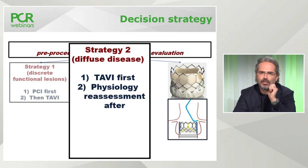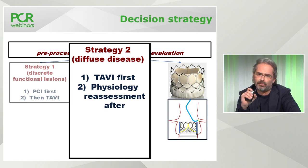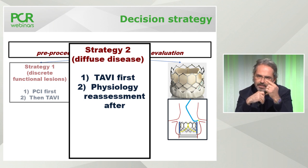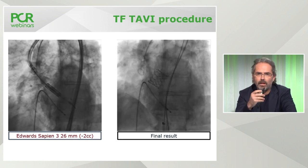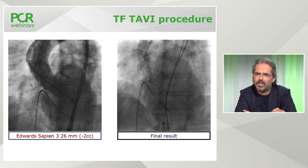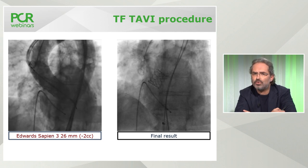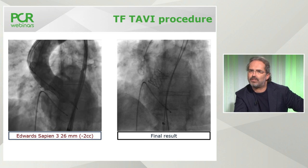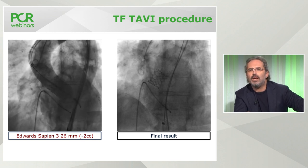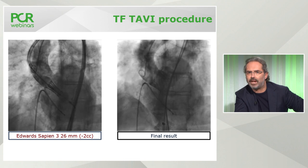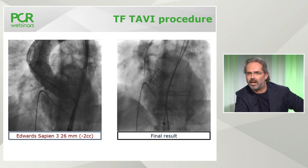We decided to go with TAVI first and reassess by physiology the functional meaning of the diffuse disease afterwards. We selected a valve that permits secure and easy coronary artery access — with the wrist plane below the coronary artery, it is easy to engage whatever catheter you use. The mean diameter was 23 mm, so we went with a 26 mm Sapien 3 given the sinus width of about 30 mm. The final result was good with no paravalvular regurgitation.